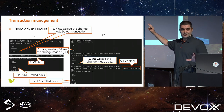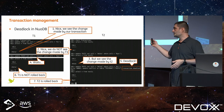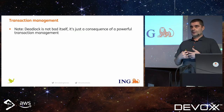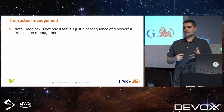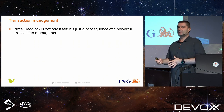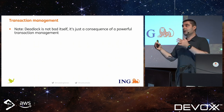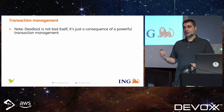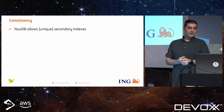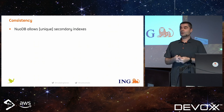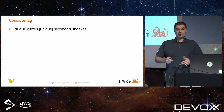We will share the presentation so you can download it and check the deadlock example in NuoDB yourself. The important concept is that deadlock is not a flaw — it's a consequence of powerful transaction management. If you work in a single-threaded environment, you won't have deadlocks, but you also can't work in parallel. In a multi-threaded environment you have to deal with race conditions and deadlocks, but you gain the possibility of parallelism. Finally, NuoDB allows unique secondary indexes, which is something not all NewSQL databases offer. This is another degree of consistency you can get from the database.